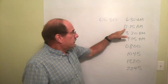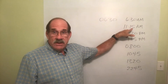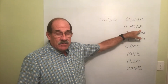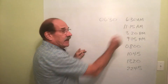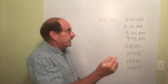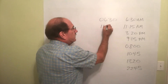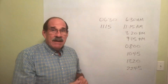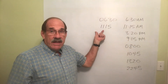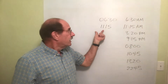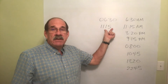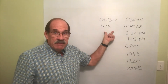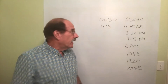What about a time that already has four digits — like 11:15 a.m.? All we have to do is take out the dots and take out the a.m. The time is 1115. The first two numbers represent how many hours it's been, and the last two are the minutes — it's been 11 hours and 15 minutes since midnight.